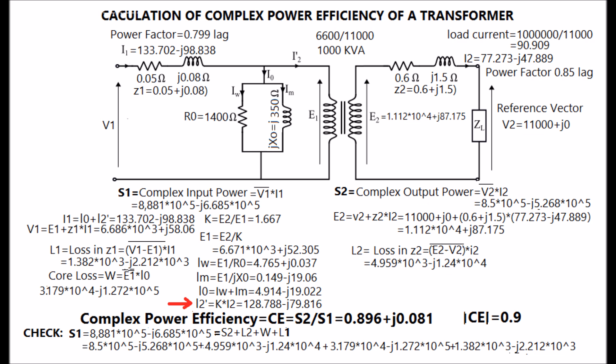I1 can be calculated by summing I-naught and I2 prime. I1 value is given in the display. The input voltage V1 can be calculated by adding the drop with E1 as shown in the display.